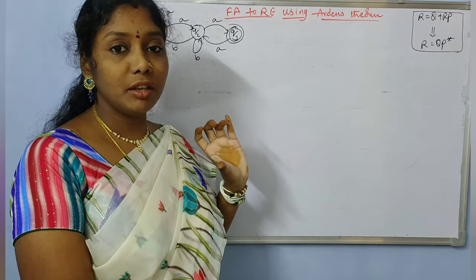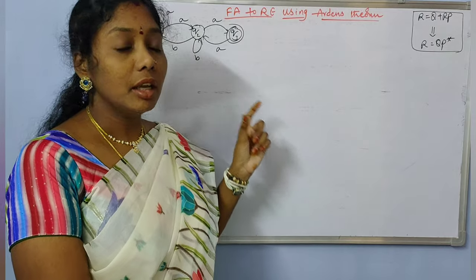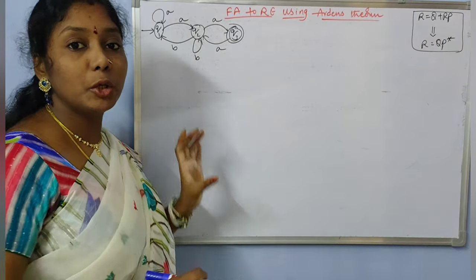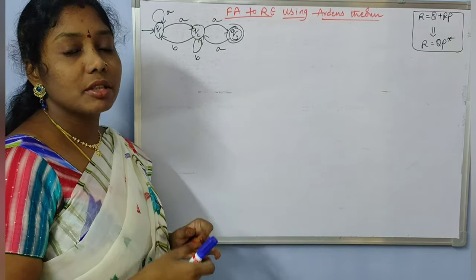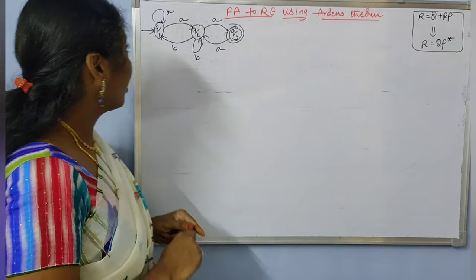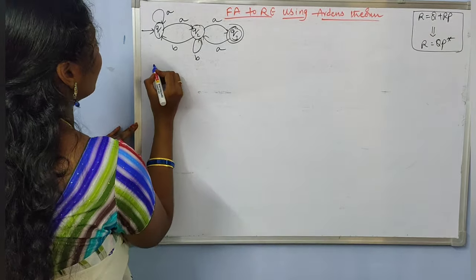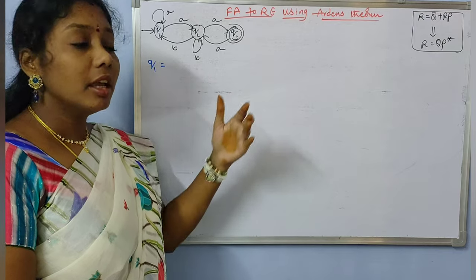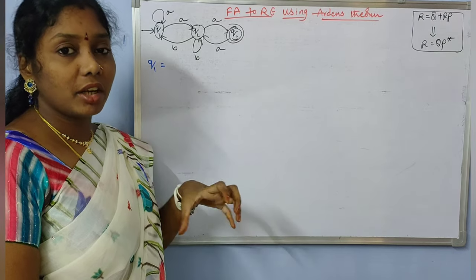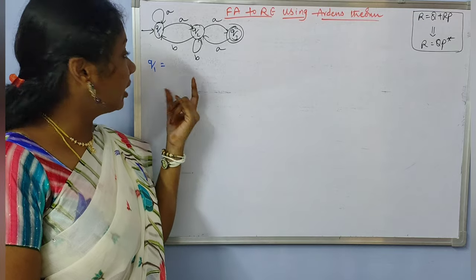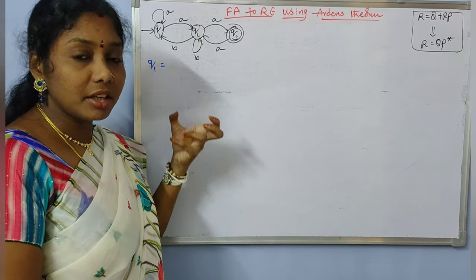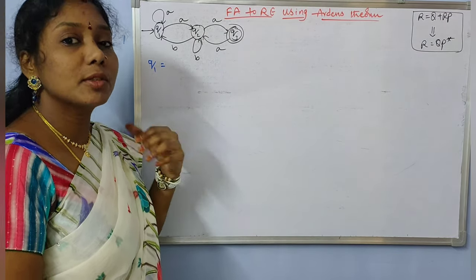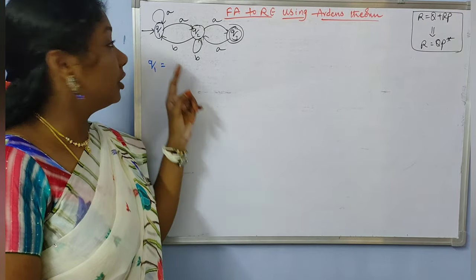This lecture is a continuation of the last lecture, so the same procedure applies. For a given NFA, first we need to write down all the reachability equations. Starting from the initial state Q1, all incoming transitions to that particular state should be considered for writing the reachability equation. For the initial state, we assume that epsilon is one of the incoming transitions.